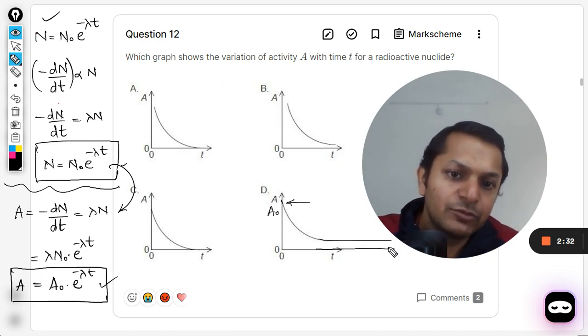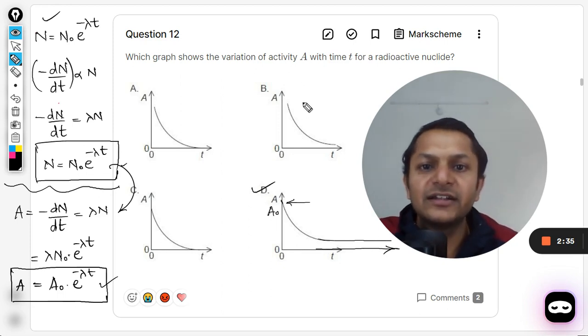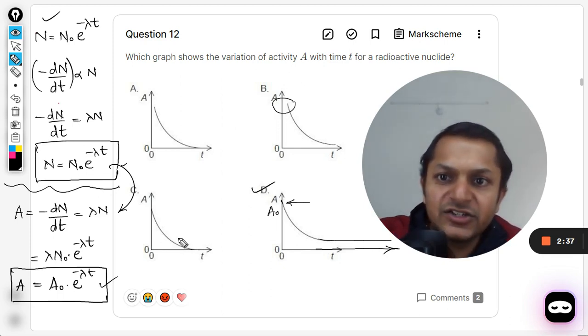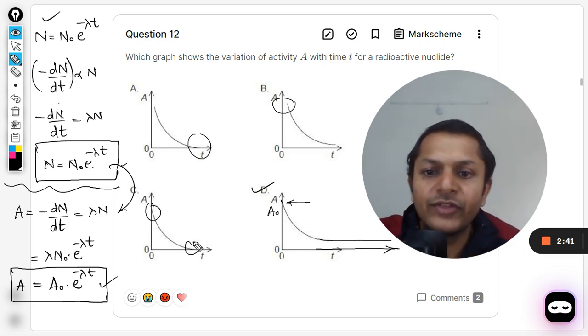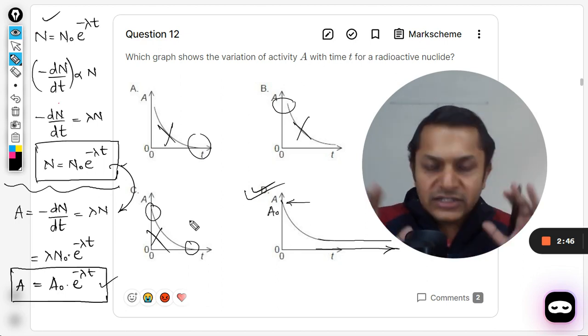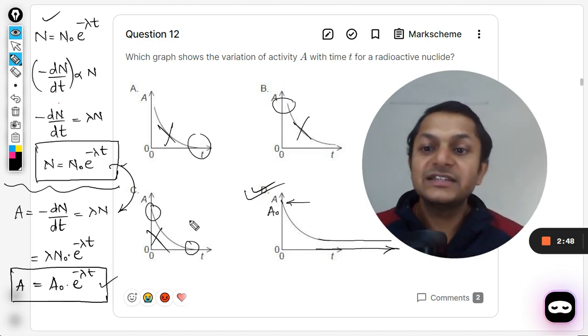It is going to create an asymptote here, so D is clearly the correct answer. In this case y-axis is not touched, in this case x-axis is touched, and in this case both are touched. So all three are wrong and D is the correct answer. This is how we do this question about the variation of activity.